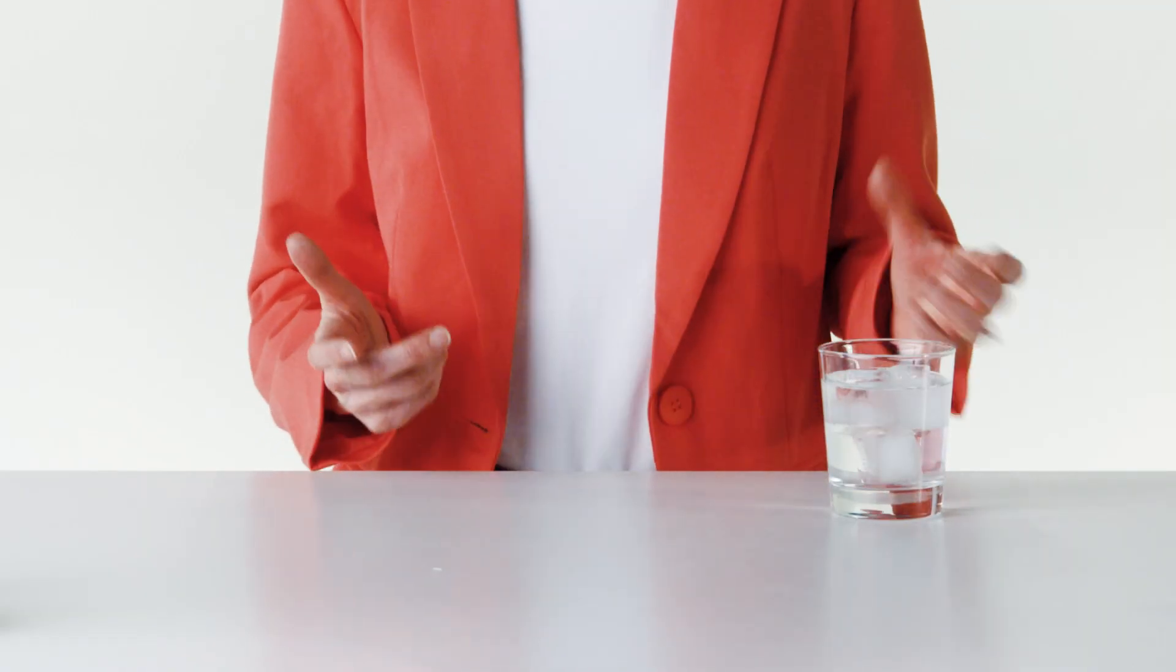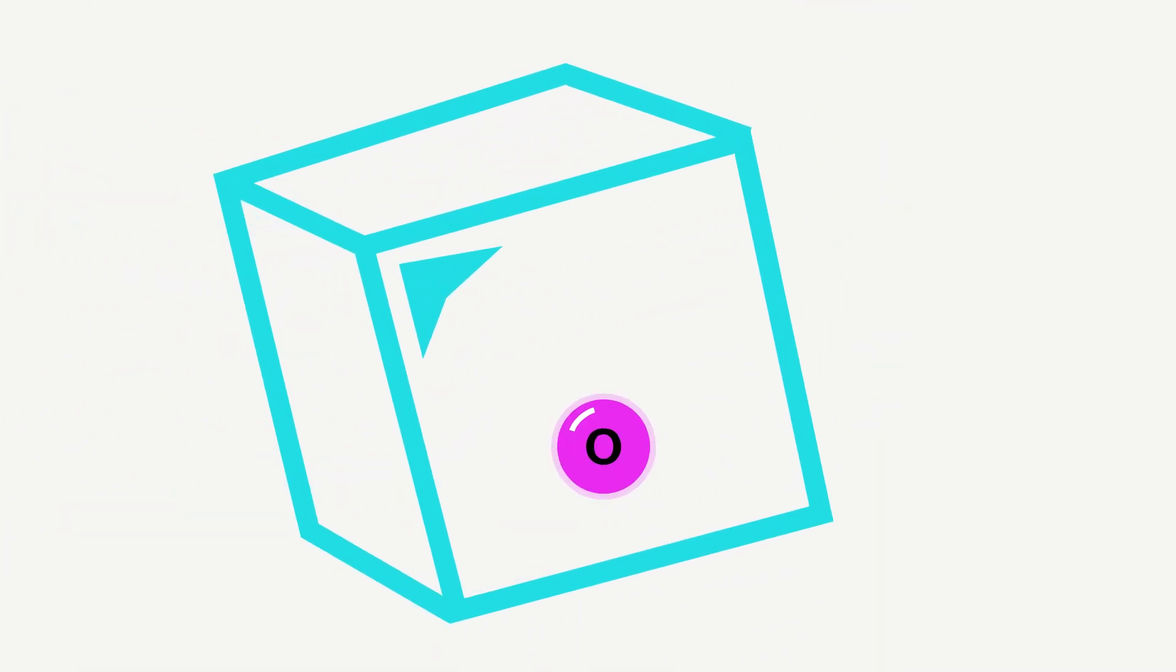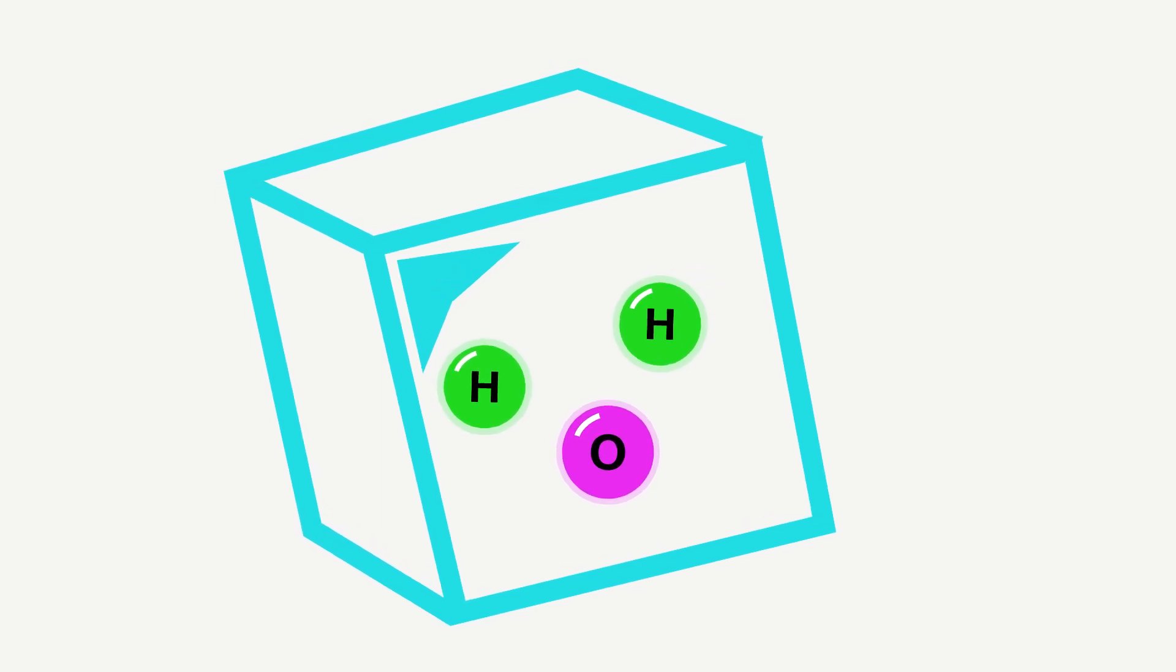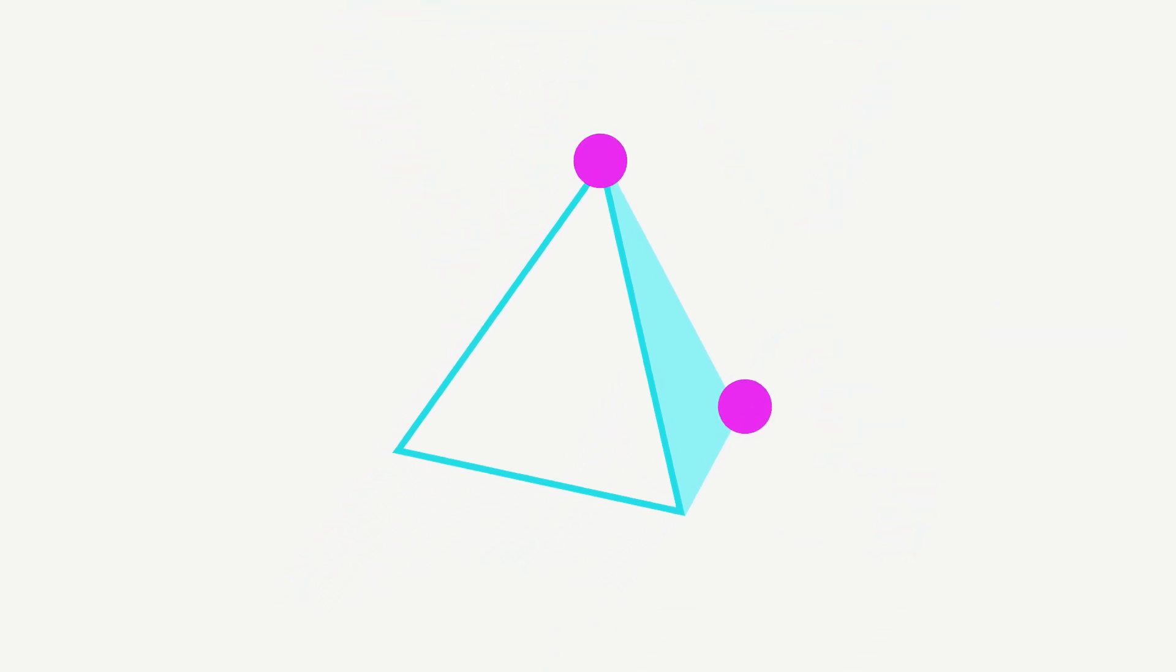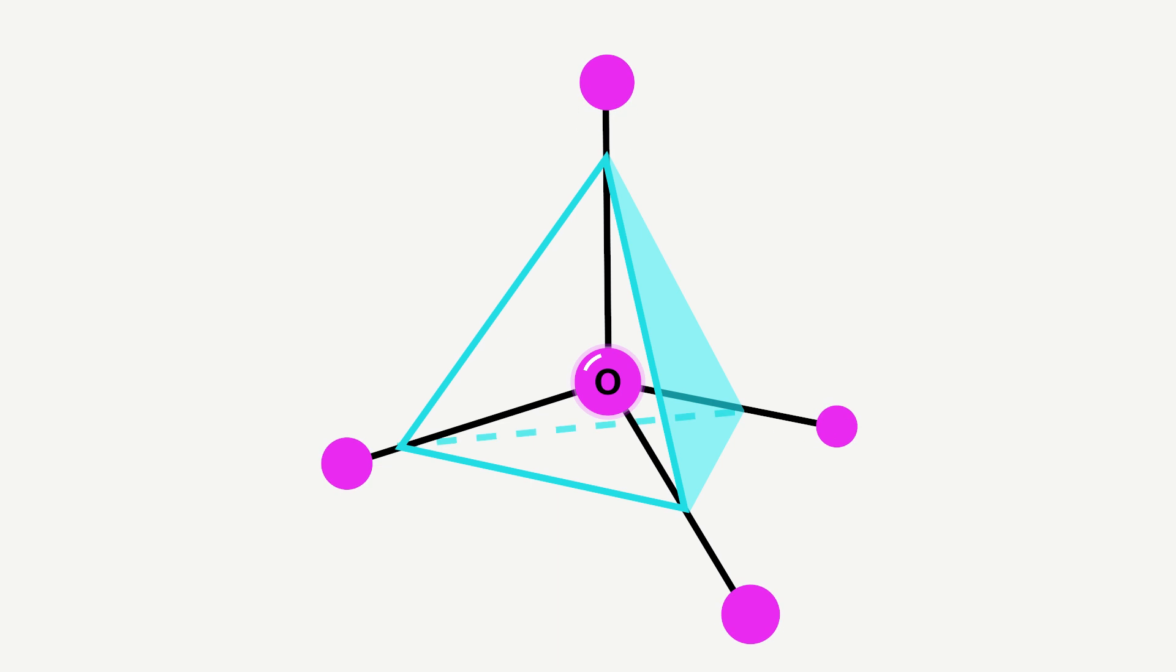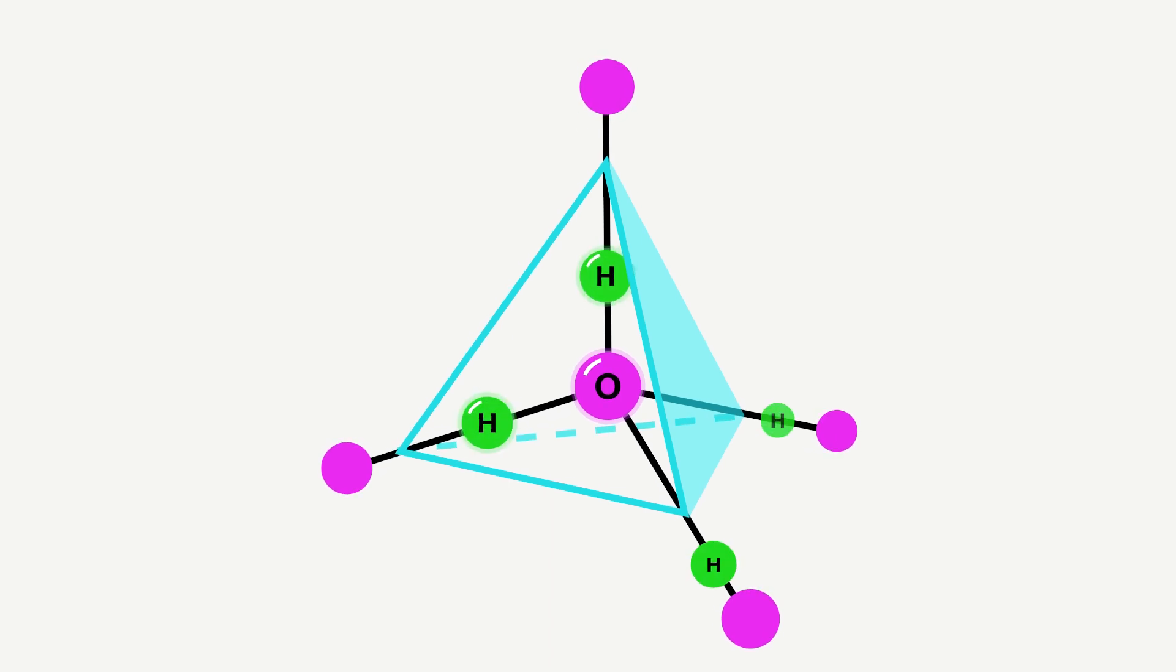They're called ice in analogy with the regular ice cubes that are in your glass of ice water. Inside of an ice cube, there are oxygens and there are hydrogens. Two hydrogens for each oxygen. The oxygens are sitting on the corners of tetrahedra, these triangular pyramid structures. And at the center of each tetrahedron is another oxygen. The hydrogens sit right in between the oxygens.